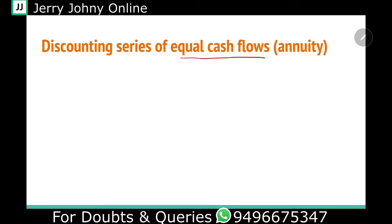This is Annuity. Annuity is the same amount — first year 1000, second year 1000, third year 1000, fourth year 1000. We will deal with the same amount. Annuity is the same; we will deal with the same amount.